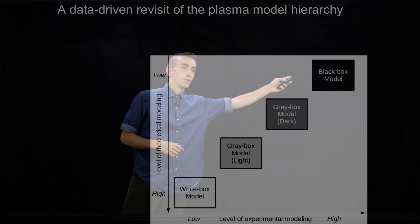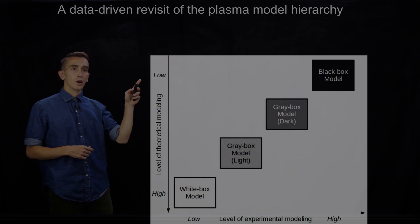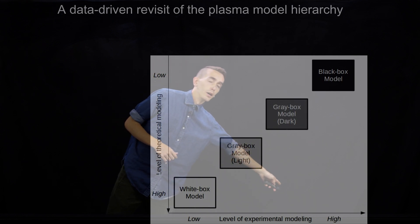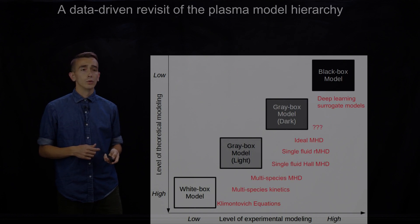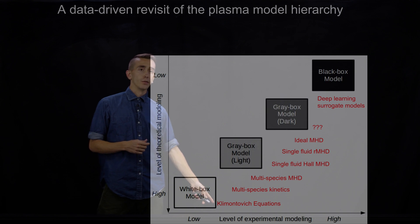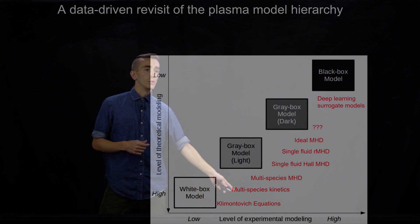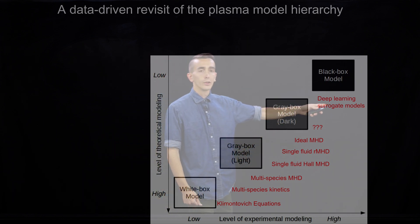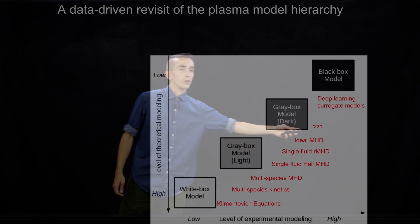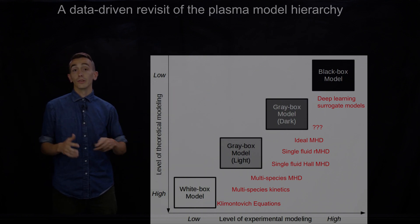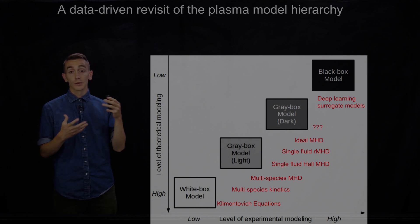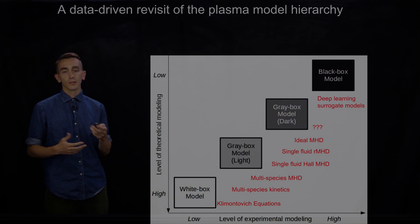going from Klimontovich to kinetics to variants of MHD. And then we have these far extreme black box models, which basically require no theoretical modeling but require huge amounts of data to synthesize and perform useful tasks. So as I said, you start down here with Klimontovich equations, you go through kinetics, variants of MHD, all the way to these deep learning surrogate models. And there's sort of a notable gap here between the MHD variants and these fully machine learning models that don't use any physics whatsoever. So basically we're going to be looking for how can we fill in this gap in the plasma hierarchy and sort of build in some physics constraints into the machine learning methods that we're going to use to do this.